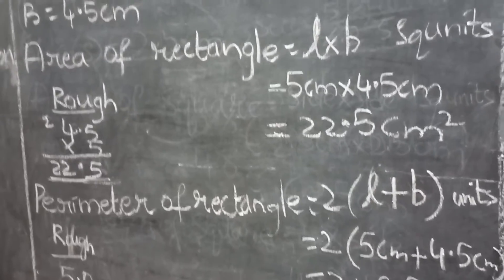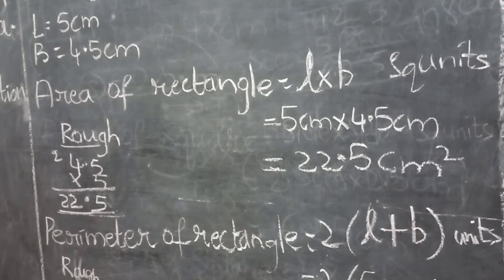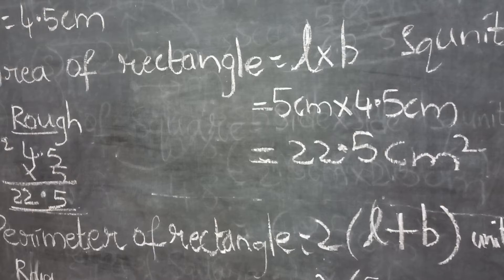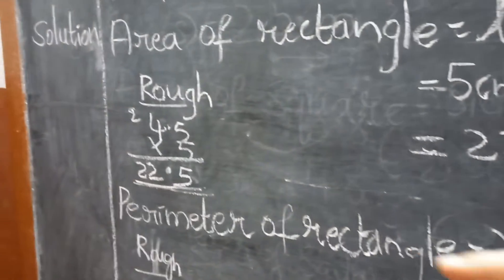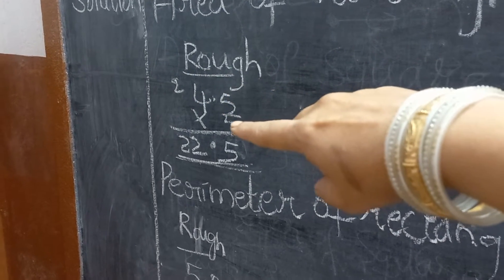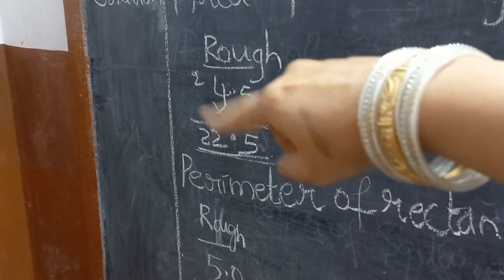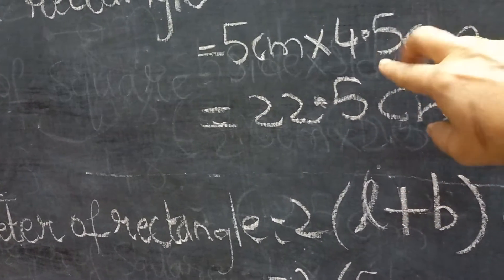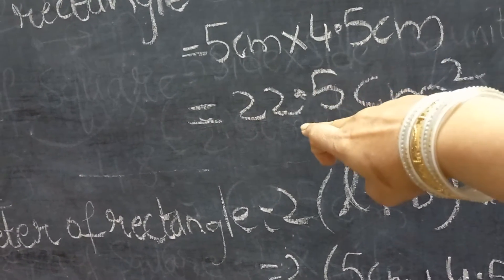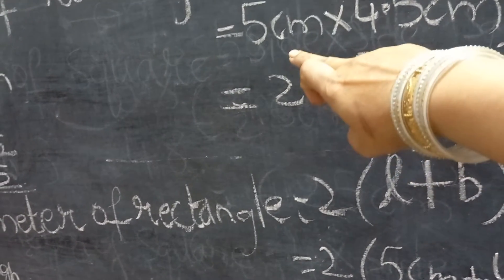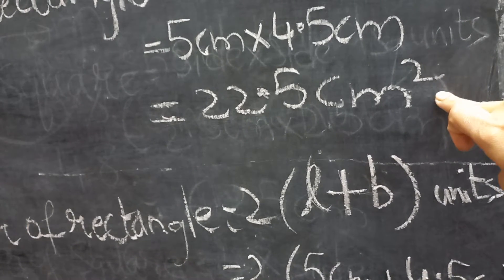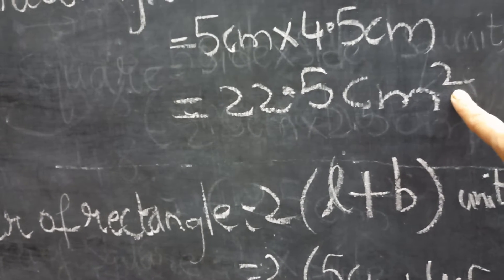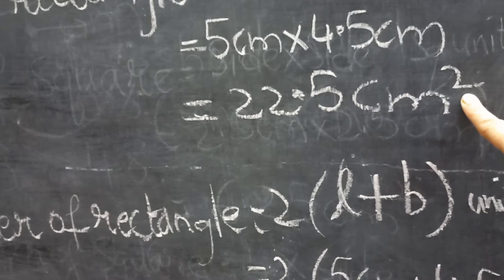Area of rectangle is L into B. L value is 5 centimeters, B value is 4.5 centimeters. Five fives are 25 — carry two. Five fours are 20, plus 2 is 22. So the answer is 22.5 — decimal after one digit. Five centimeters into centimeters is centimeters square. Yesterday a few students forgot to write the square — it is important.